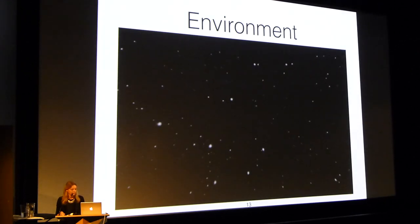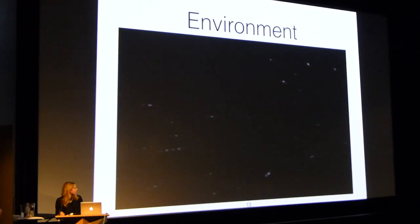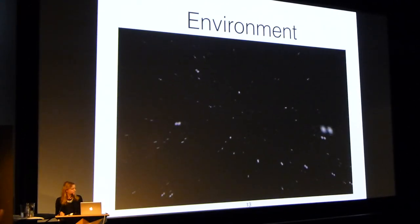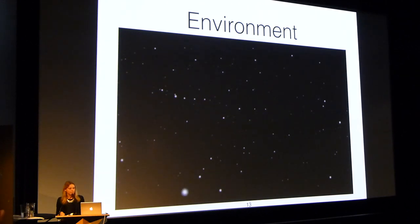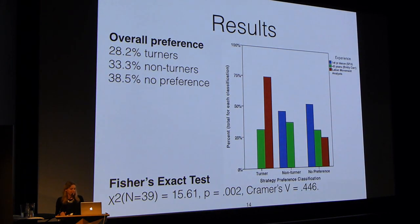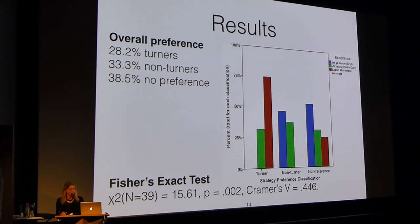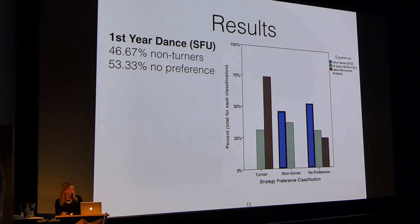This is the environment participants were given — I'll show you a quick trial. At the end of that, you're asked to point to where the starting location is, as if you traveled that virtual path. What I found was that overall, people used a wide variety of different strategies. In blue are the first-year dance students, green is the less-than-5-years group, and red is the Laban Movement Analysts. We found a medium association between type of strategy and level of movement experience.